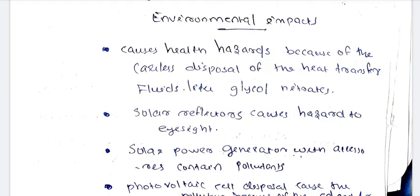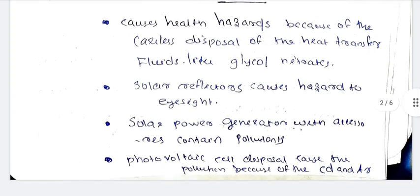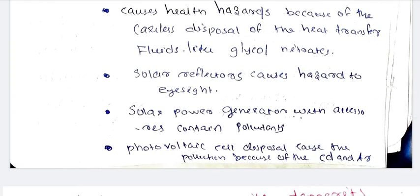For example, solar energy materials may contain pollutants. Solar power plants produce pollution. Photovoltaic cells cause pollution due to cadmium and arsenic. When disposing of a solar cell, it may contain harmful or hazardous chemicals, which is why it causes pollution.